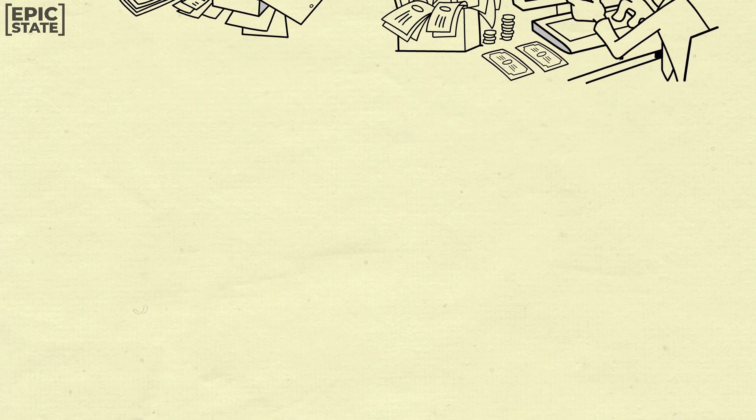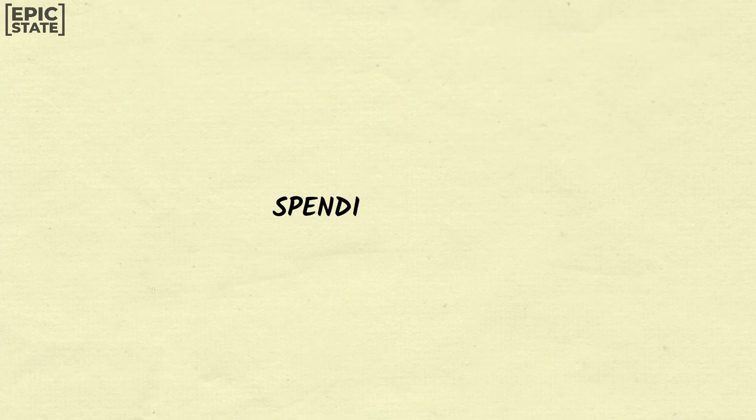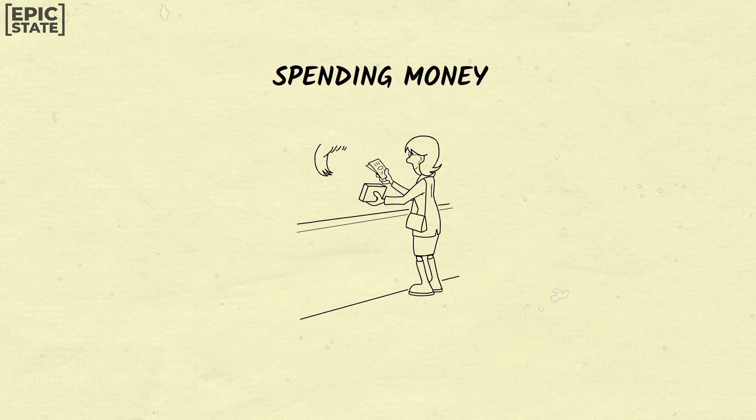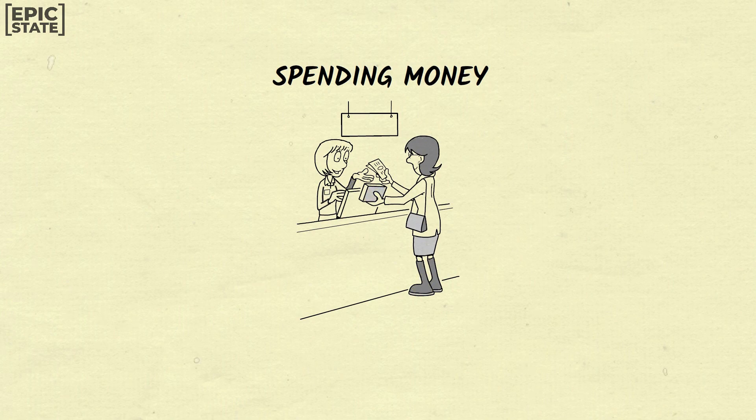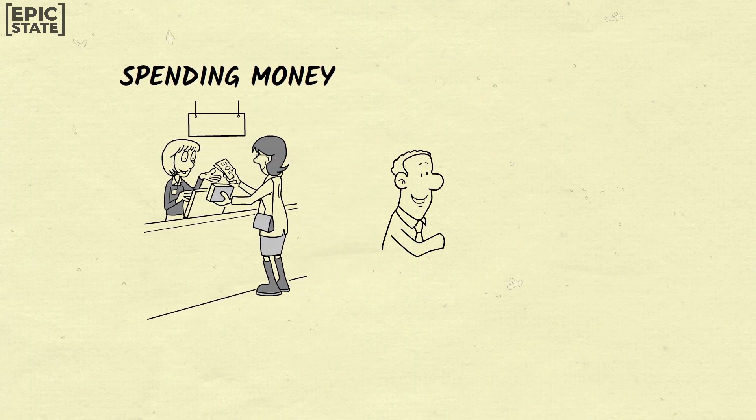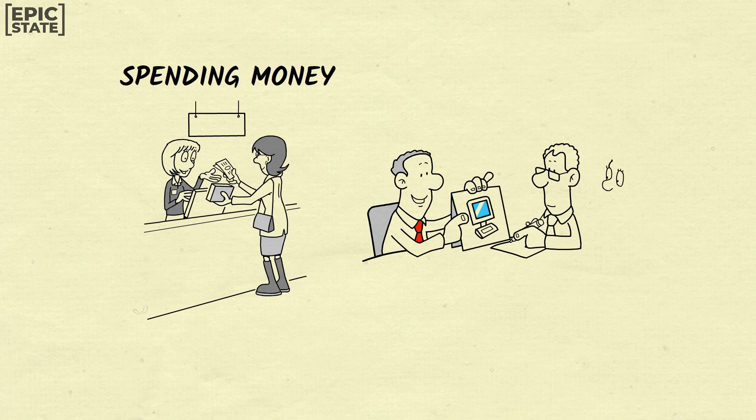Number seven: Poor people spend money impulsively, while rich people budget and plan for purchases. Poor people tend to make impulsive, unplanned purchases without considering the long-term impact on their finances, while wealthy individuals take a more deliberate approach, budgeting and planning for their expenses. This habit of planning is crucial for achieving financial stability.